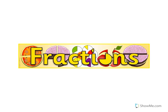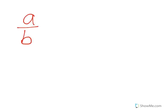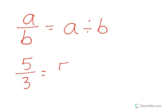In today's lesson on fractions, we're going to look at how fractions are related to multiplying and dividing. Fractions can be represented as a division of the numerator by the denominator. So here we have A over B — that can also be written as A divided by B. For example, 5 thirds can be written as 5 divided by 3.